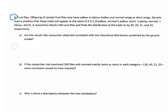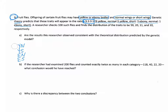Offspring of a certain fruit fly may have yellow or ebony bodies and normal or short wings. Genetic theory predicts these traits will happen in a 9 to 3 to 3 to 1 ratio — for every 9 yellow normal fruit flies, there will be 3 yellow short, 3 ebony normal, and 1 ebony short. So our categories are yellow normal, yellow short, ebony normal, and ebony short.